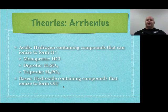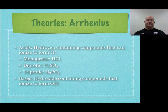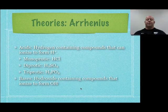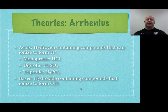Arrhenius is a great starting point — a very simple definition. Acids make hydrogen ions; bases make hydroxide ions. It's never wrong; these are always true. The problem is there are other things out there that are also acids and bases that this definition would not include. So we want to expand this definition.